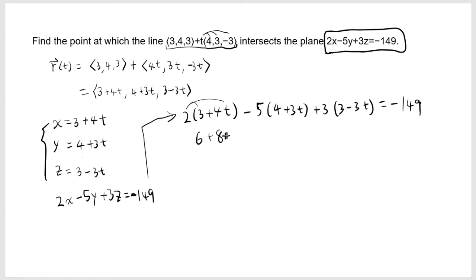6 + 8t minus 20. 5 times 3 is 15. 3 times 3 is 9. Minus 9t equals negative 149. Let's gather all the t's together. 8 minus 15 is negative 7. So negative 7 minus 9 is negative 16t. 6 minus 20 is negative 14. Negative 14 plus 9 is negative 5. Add 5 to both sides.